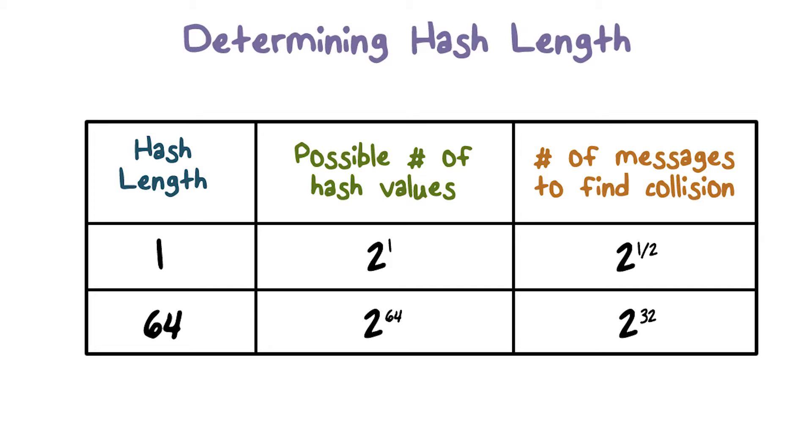In other words, the attacker only needs to search 2 to the power of L divided by 2 messages in order to find a collision.